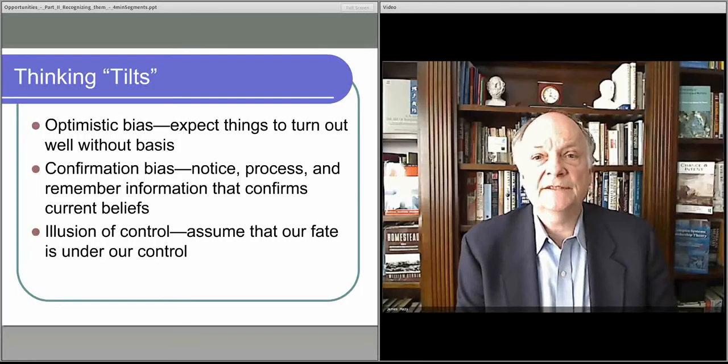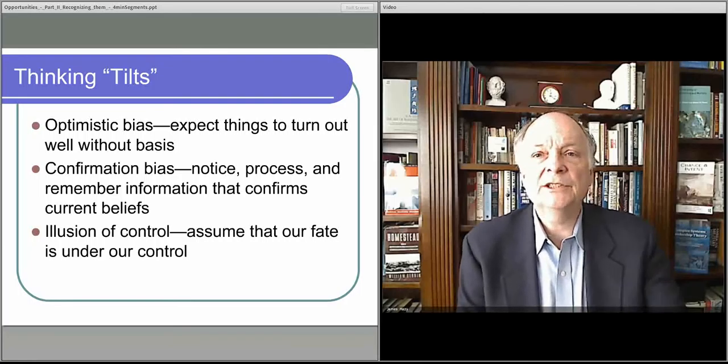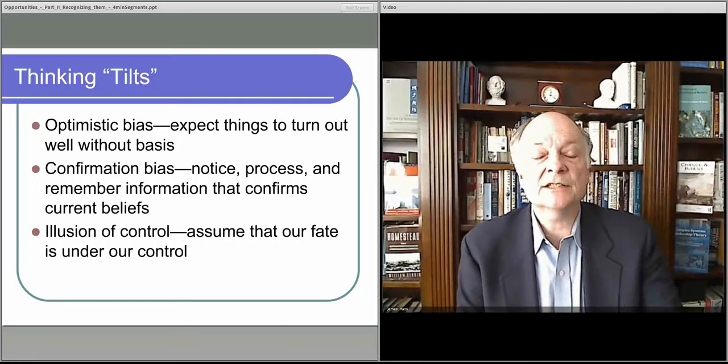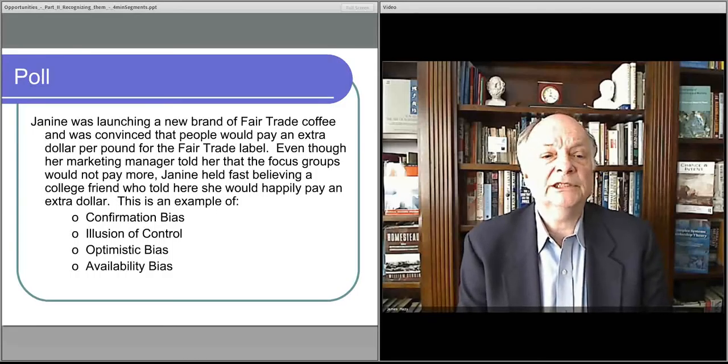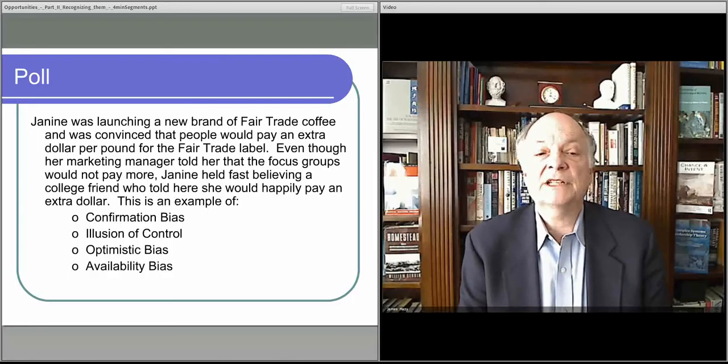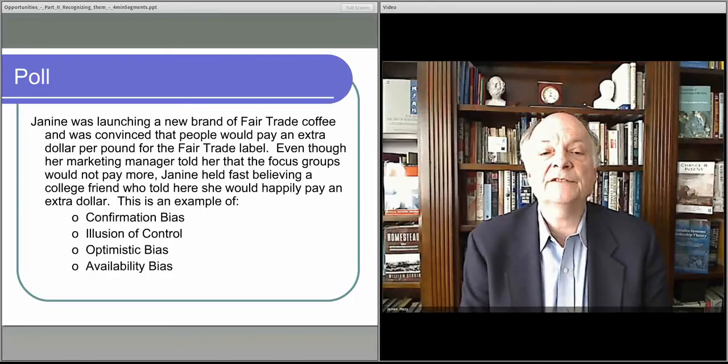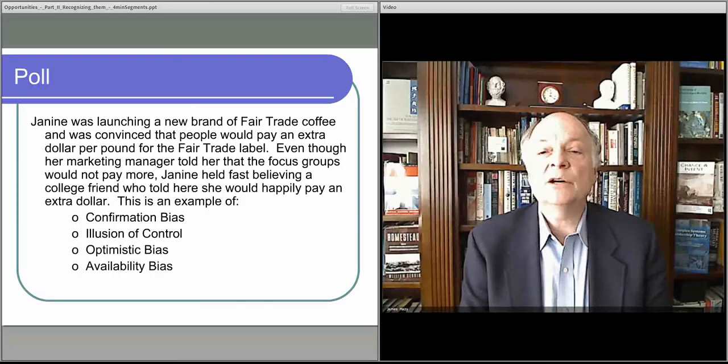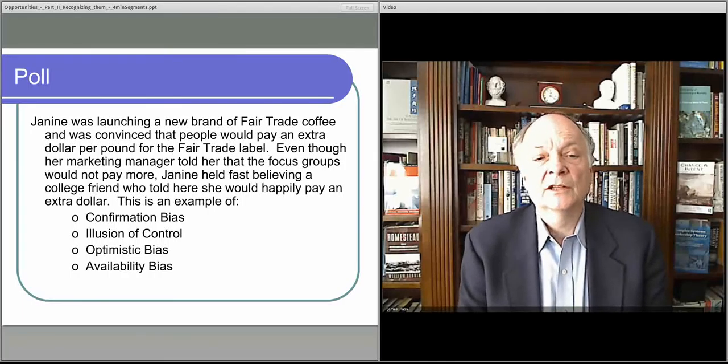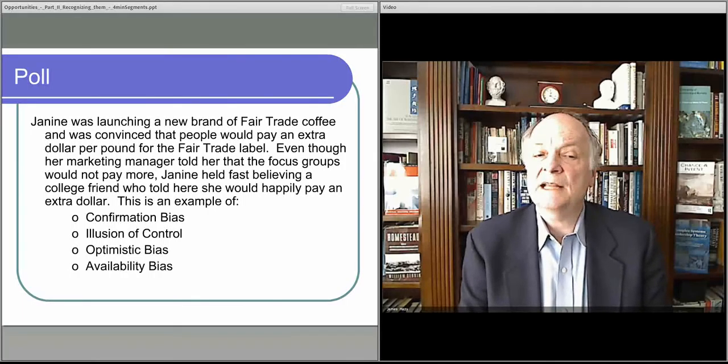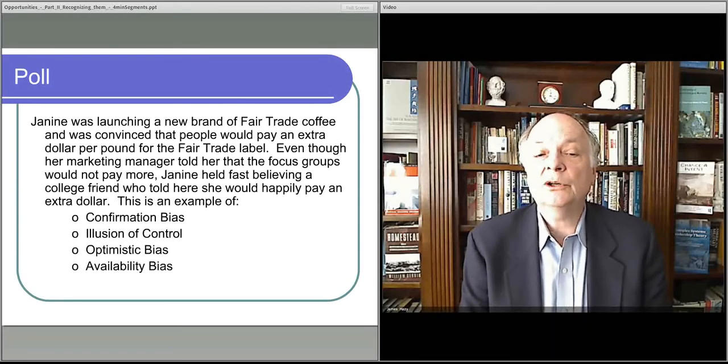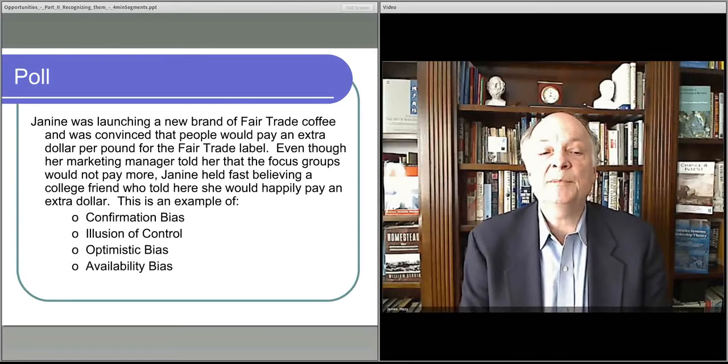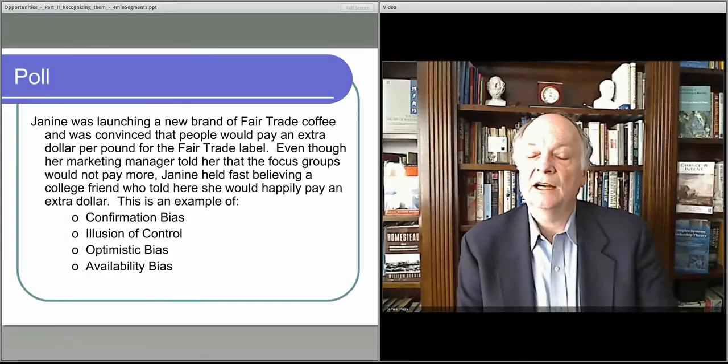We're going to try something a little bit different on this video. We're going to do a couple of quiz questions that you do during the video. Take a look at this poll question. It says, Janine was launching a new brand of Fairtrade Coffee, was convinced that people would pay an extra dollar per pound of the Fairtrade label. Even though her marketing manager told her that the focus group said they would not pay more, Janine held fast, believing a college friend who told her that she would happily pay an extra dollar. This is an example of what?